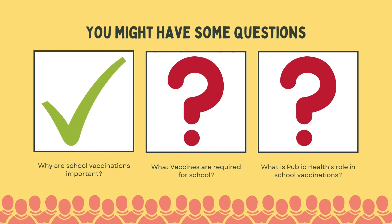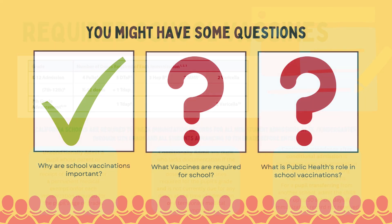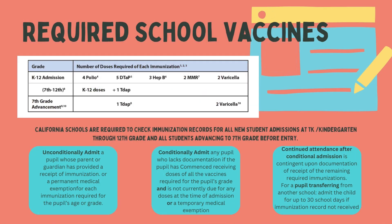Now let's cover what vaccines are required for school. The required school vaccines for grades K through 12 are: 4 or 5 doses of polio, 5 doses of DTaP, 3 doses of hepatitis B, 2 doses of MMR, and 2 doses of varicella. For 7th through 12th grade, you need all the K-12 doses as well as one dose of Tdap. In order to advance to 7th grade, you need that one dose of Tdap and the two varicella doses.